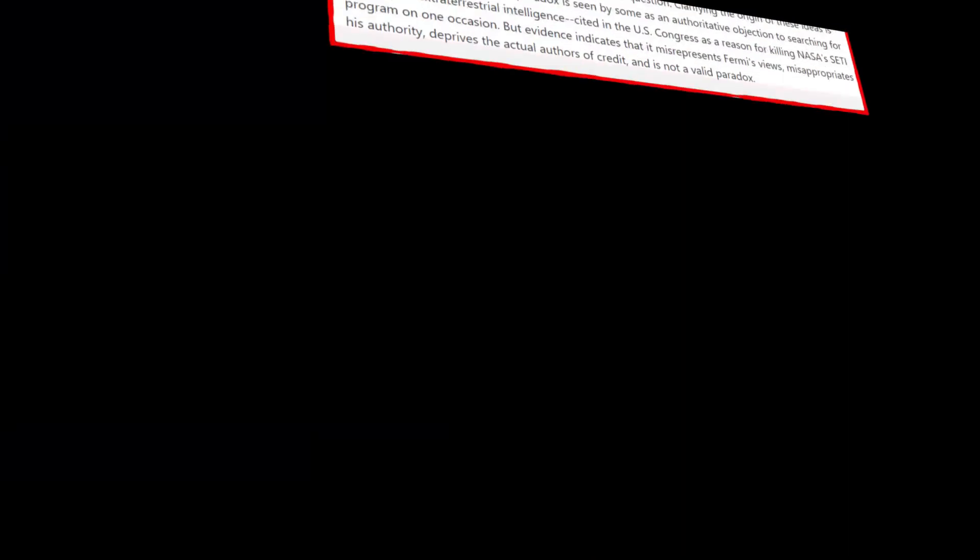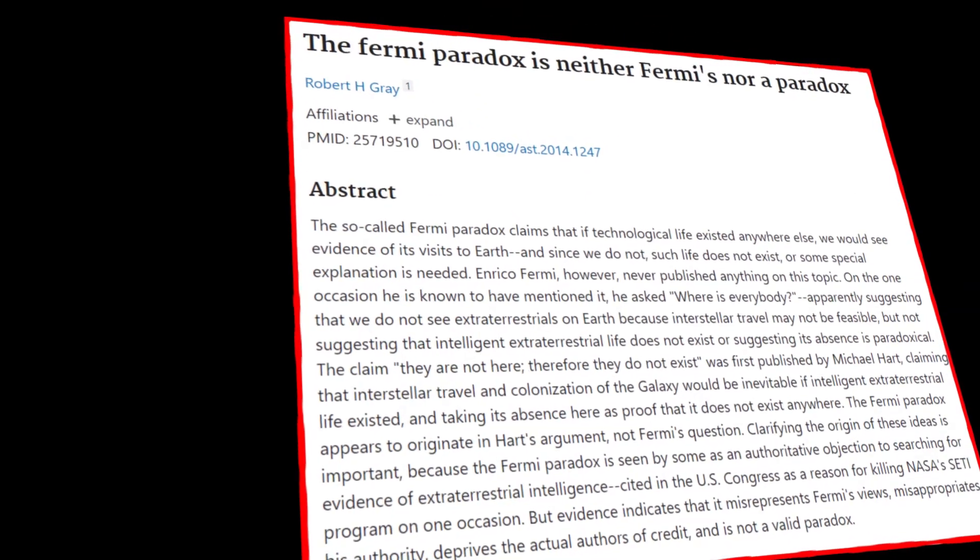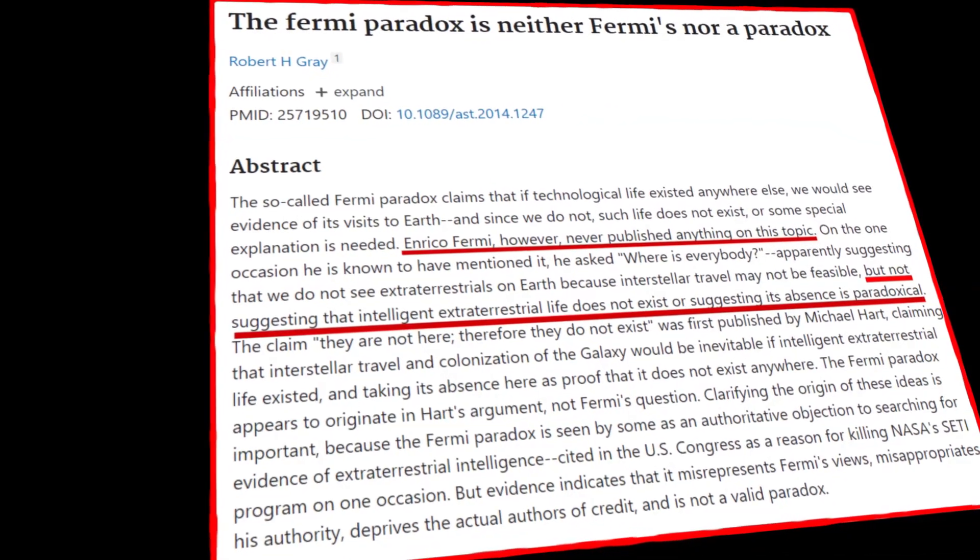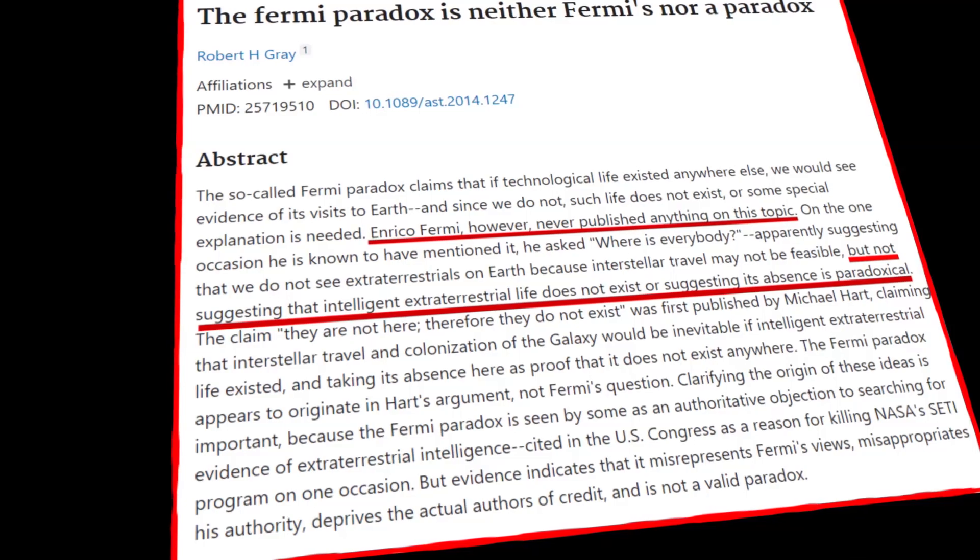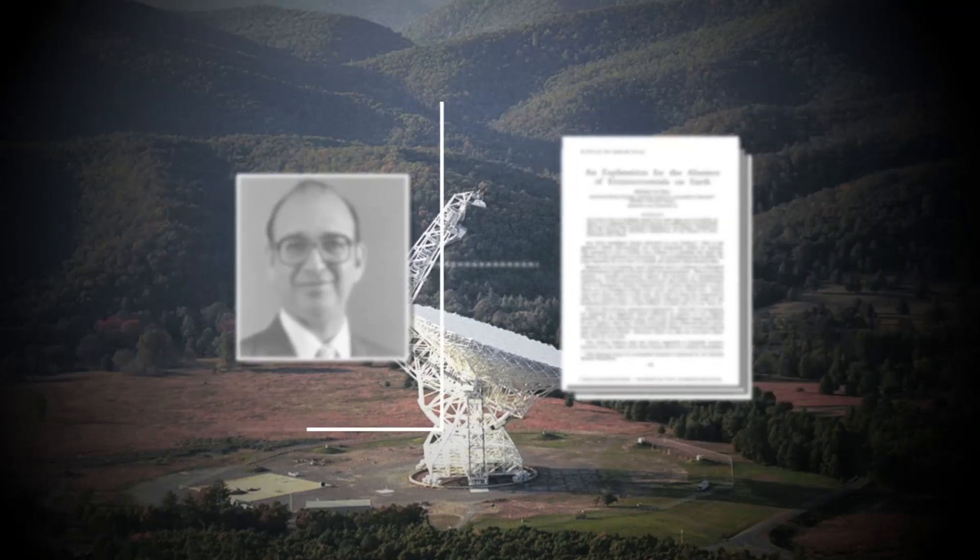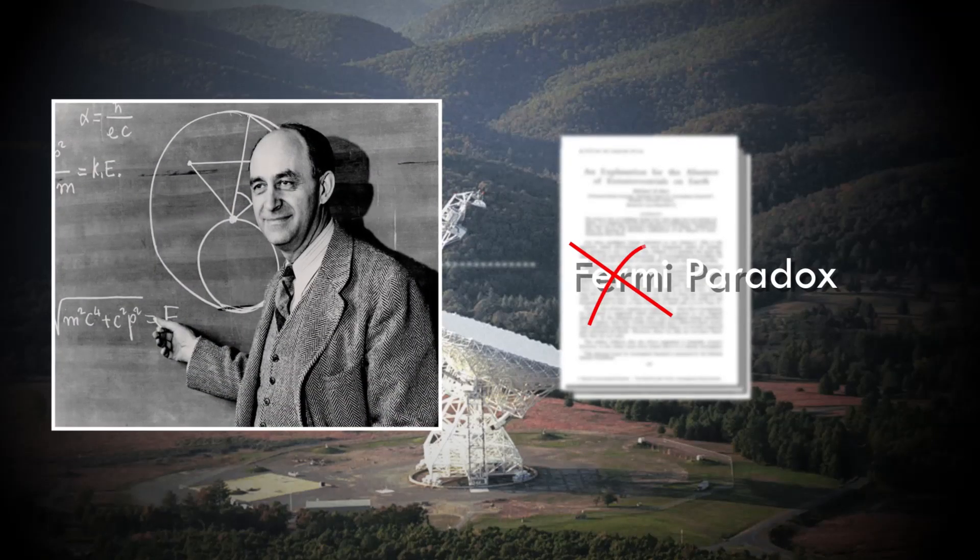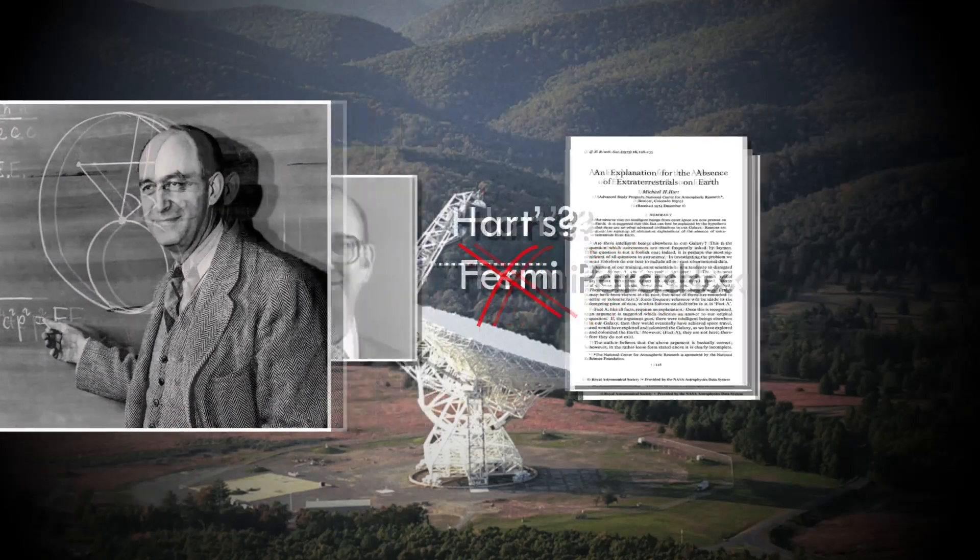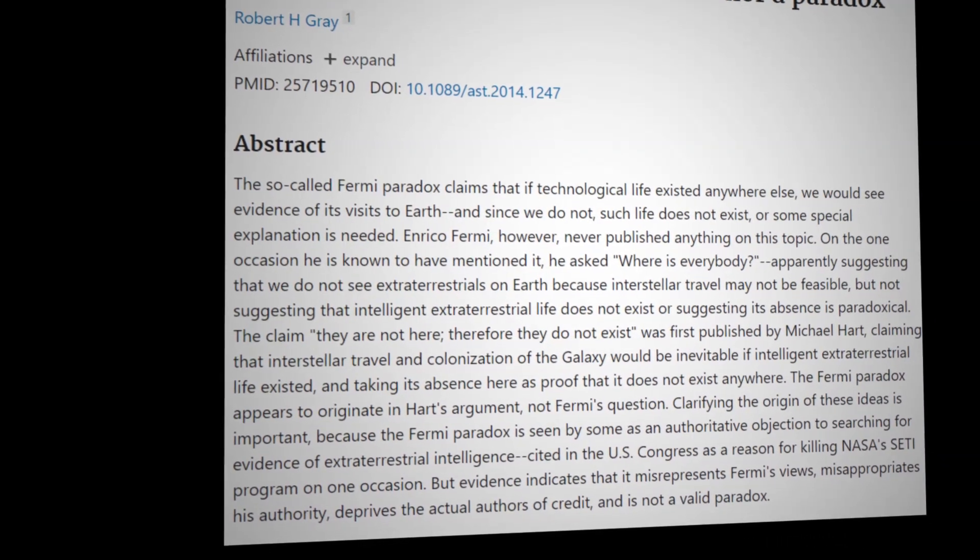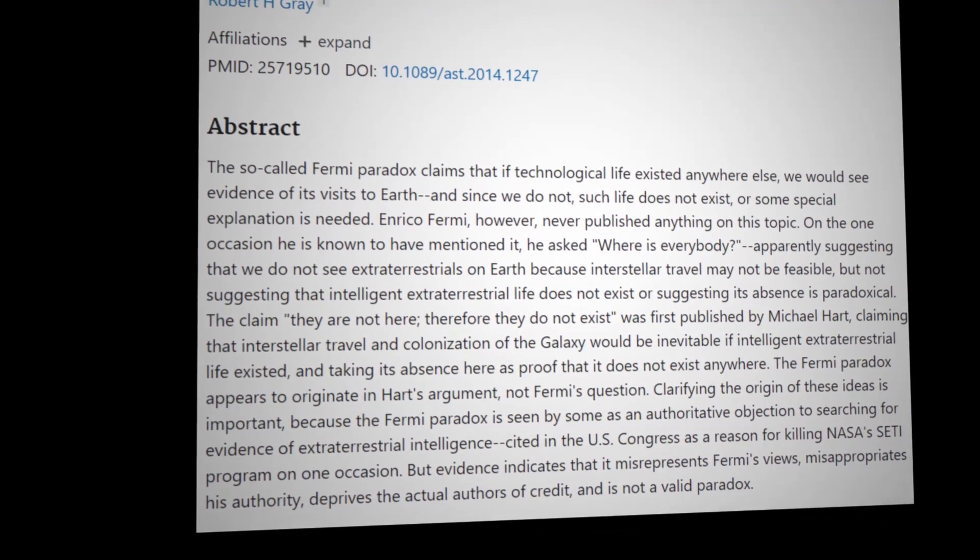An article written by Robert H. Gray states that Enrico Fermi never actually said that intelligent extraterrestrial life is non-existent and that the absence of it is paradoxical. It is further stated that this is due to a mix-up from an argument about the Fermi paradox by astrophysicist Michael Hart. In other words, the argument that life in outer space is absent originated from a theory posed by another scientist, and never by Enrico Fermi himself. In fact, there is only one known instance where Fermi mentions this idea, with it being only one short quote: where is everybody?